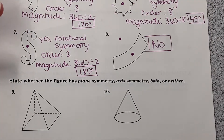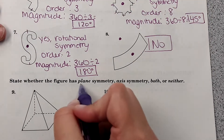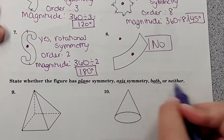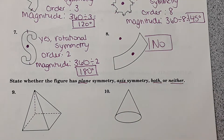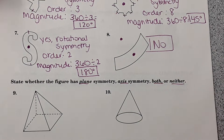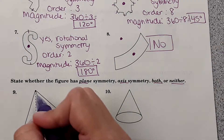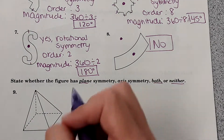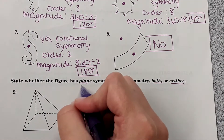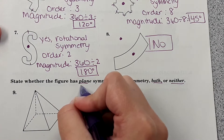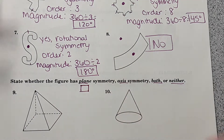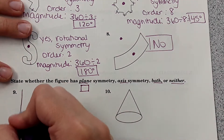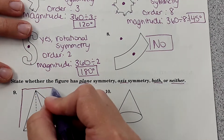Now a different kind of symmetry: state whether the figure has plane symmetry, axis symmetry, both, or neither. Plane symmetry is like when you slice a 3D shape with a plane — if it's the same on both sides, it has plane symmetry. I think of it as literally slicing it with a plane.